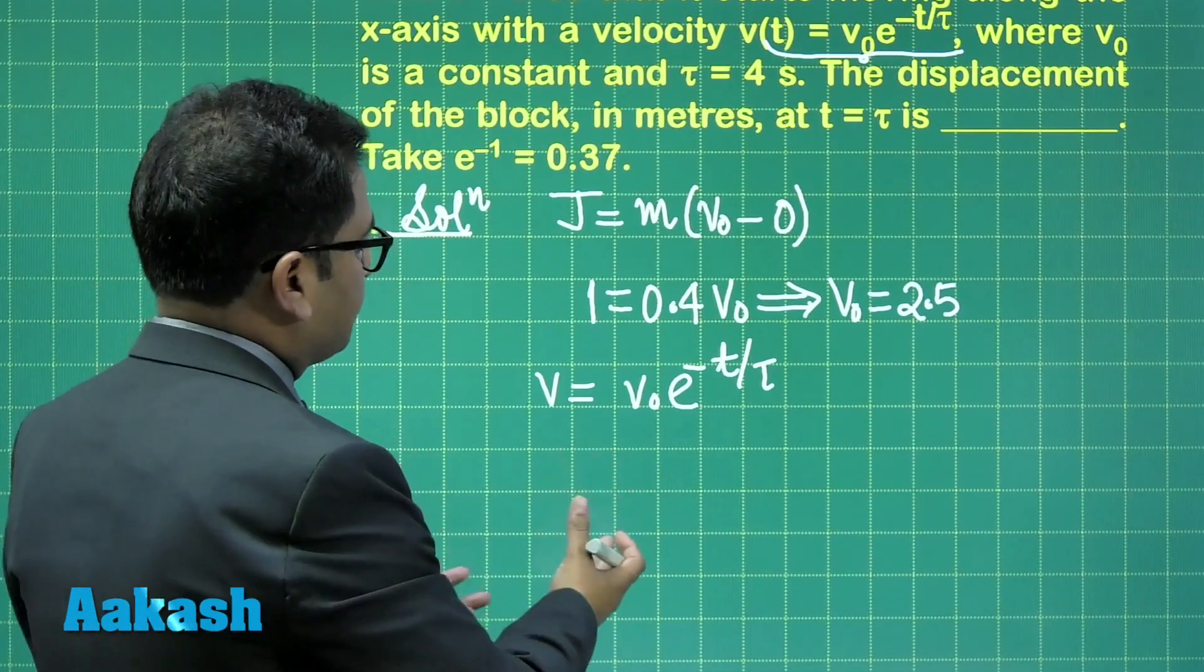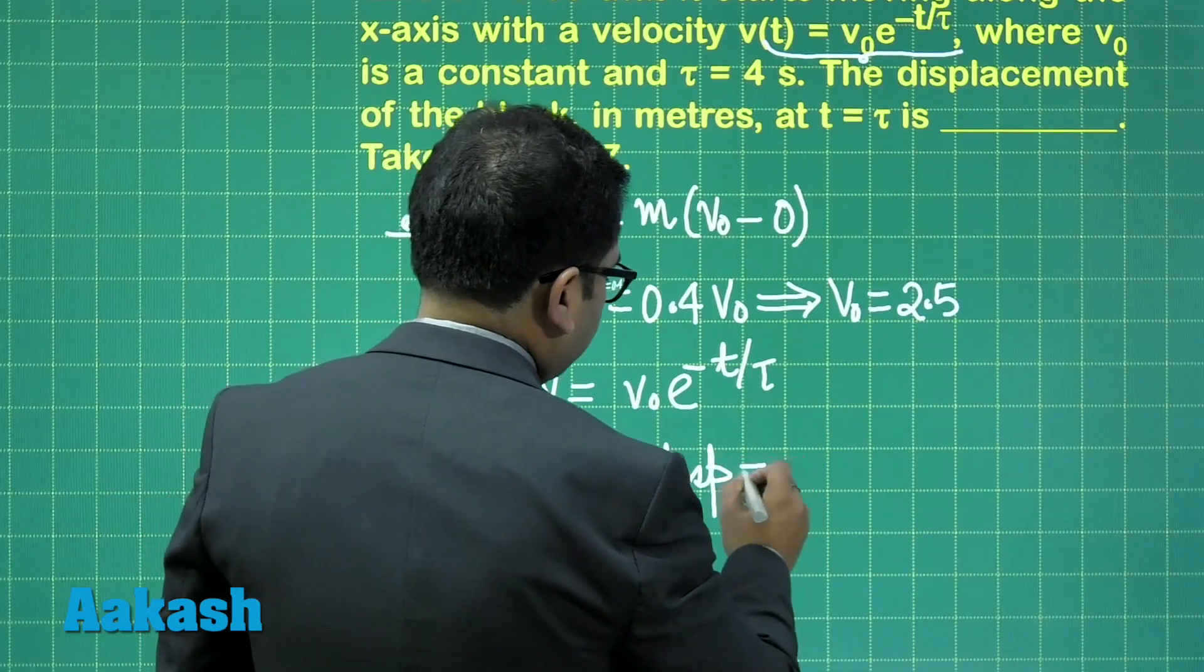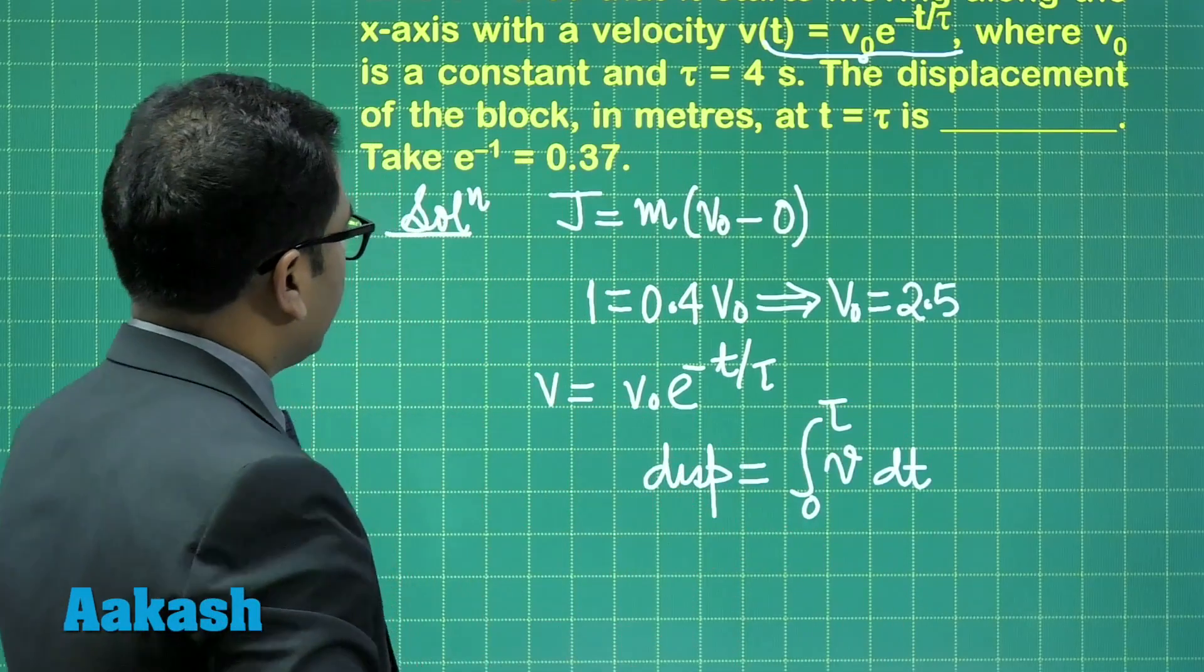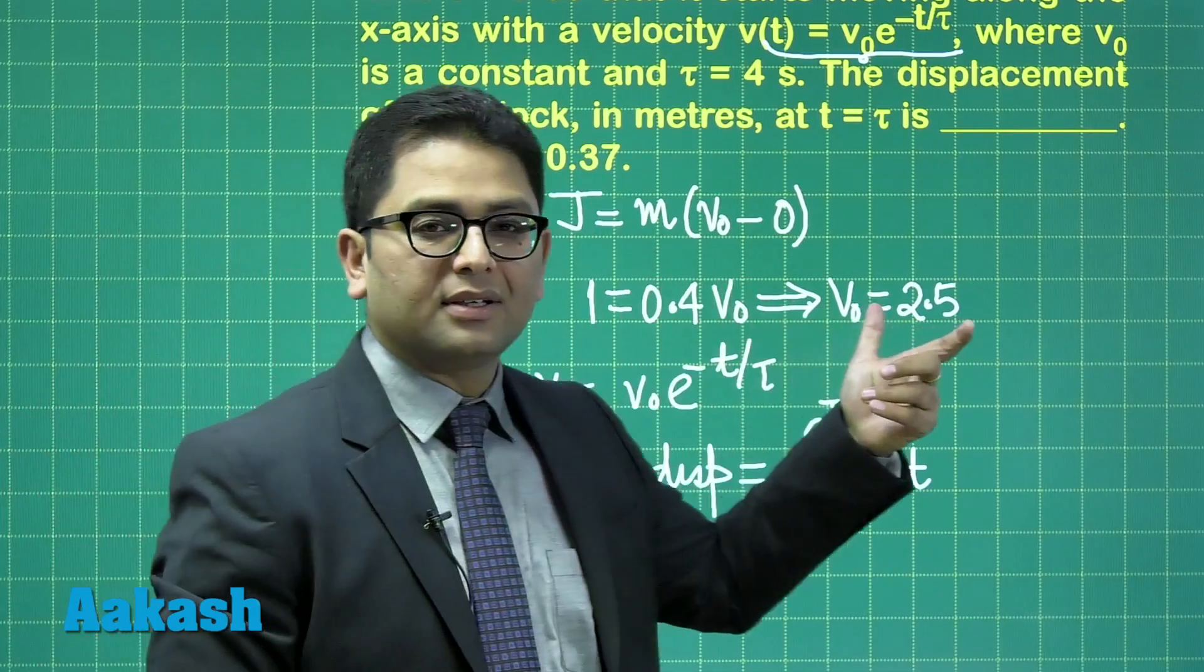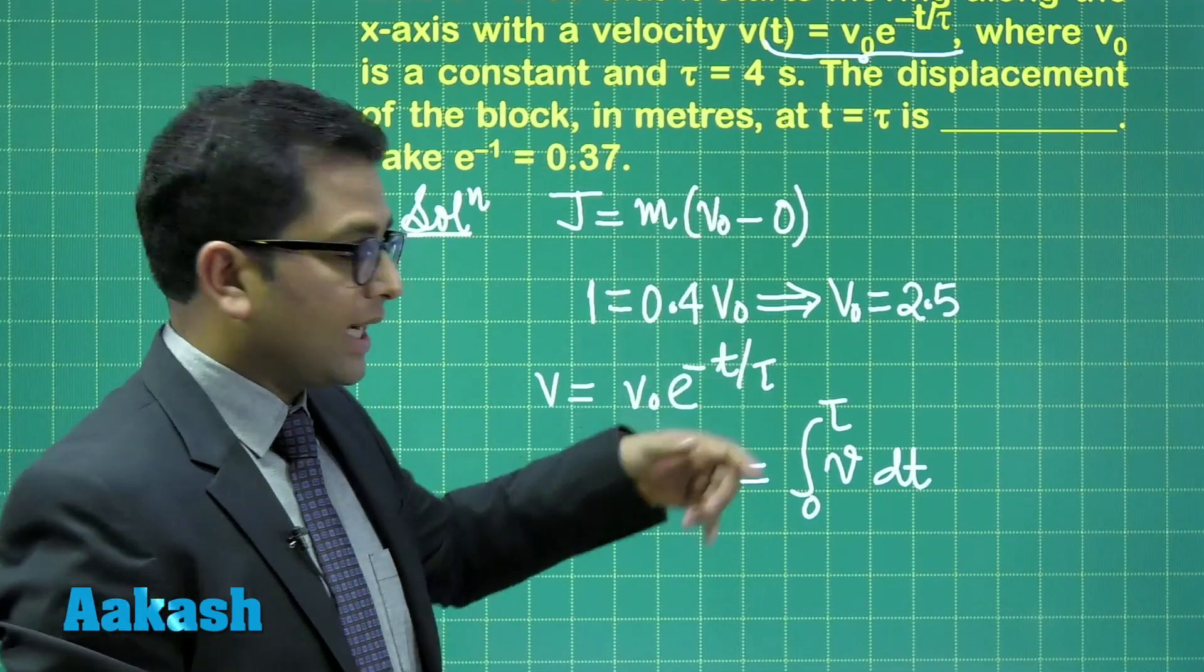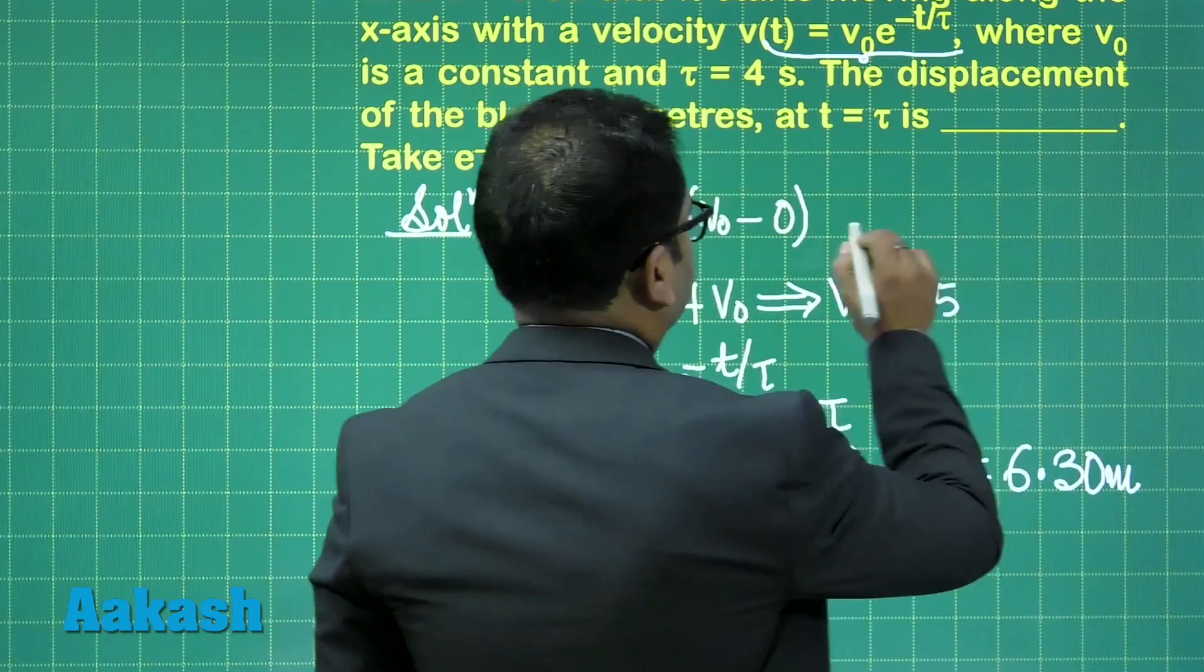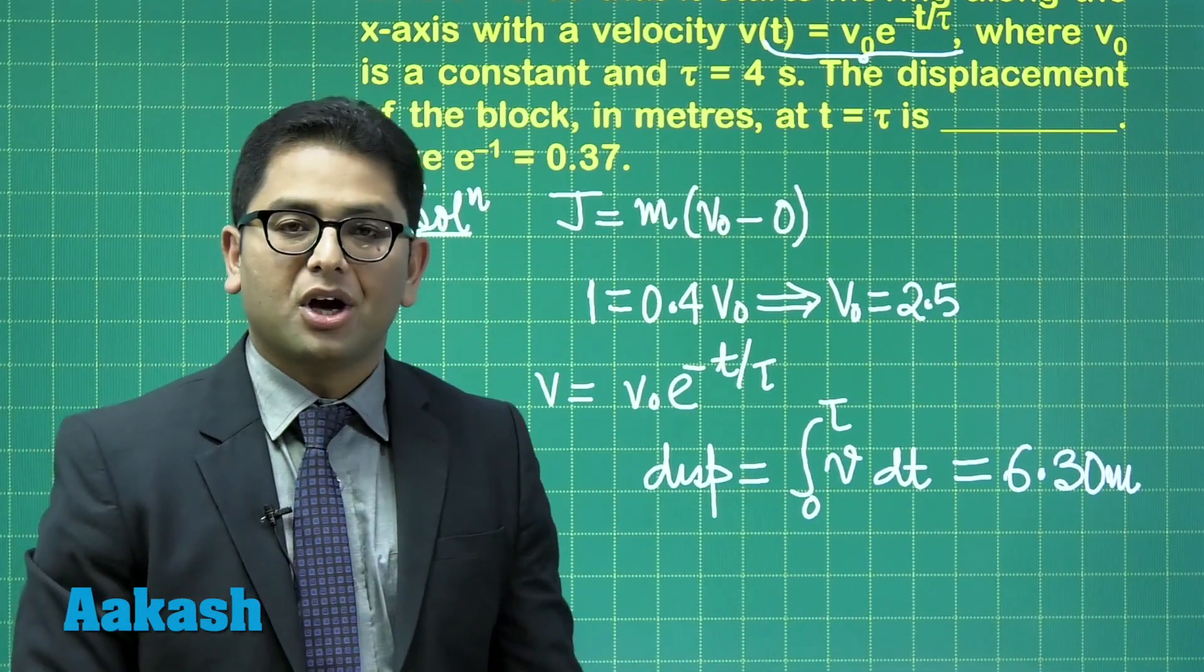So the displacement would be the simple integration of this thing. And this displacement is integral v dt from the limit 0 to τ. It's a simple integration. And even e raised to the power minus 1 is given. Even if this had not been given, as a normal aspirant, we remember this value. And when you calculate this thing, you get this to be 6.30 meter. So that is going to be the correct answer for question number 7.